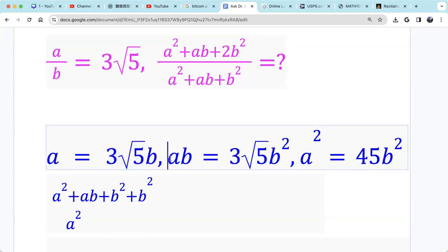So then A times B, we can write it as 3 radical 5B times B, which we get 3 radical 5B squared. And A squared, we just raise this one by square. 3 squared is 9, square root 5 squared is 5. 9 times 5 is 45B squared.